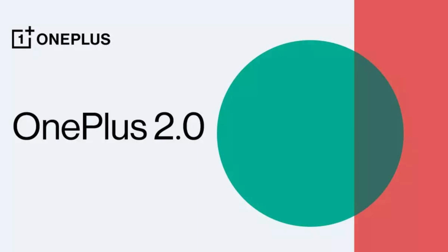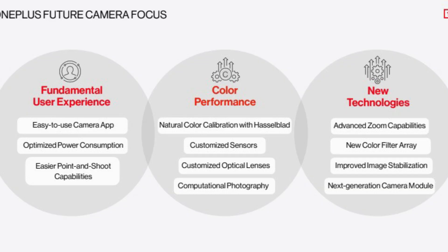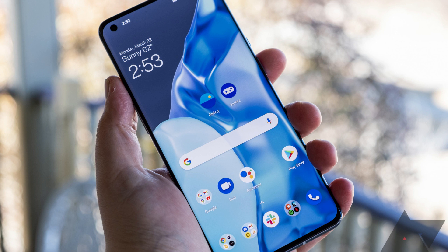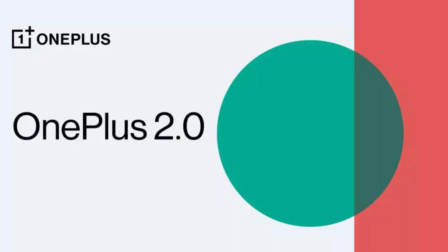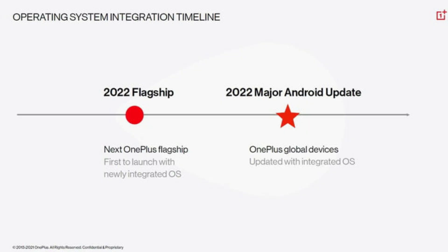This one has a better camera. This is the OnePlus 10 series, which has a better smartphone and a better OS. In 2022, this is the OnePlus World Mobile, and it has a better OS update.